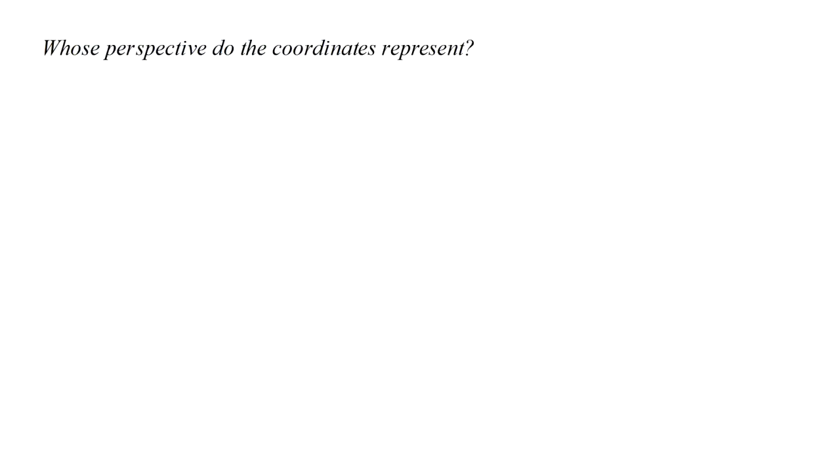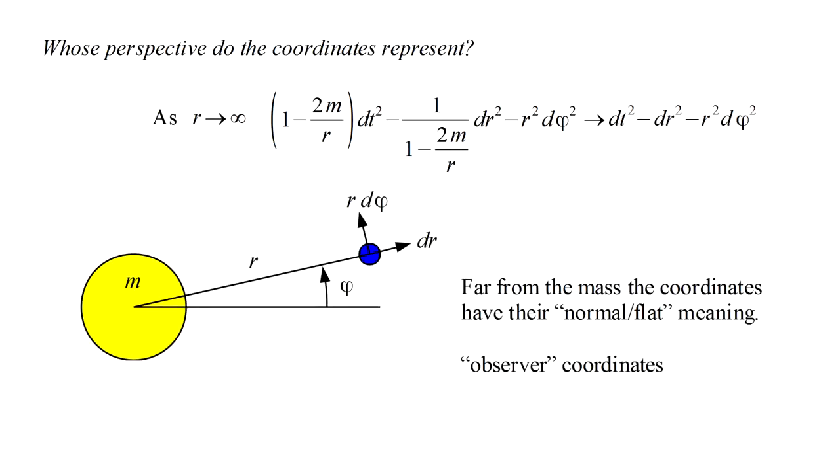In previous videos, we've seen that in general relativity, no single coordinate system can provide an undistorted view of all space-time, but instead provides only a particular perspective. What perspective do our coordinates represent? Consider our metric as we move far away from the mass, that is, the coordinate r increases towards infinity. The 2m over r term shrinks to zero, and we are left with a metric of flat spacetime. That is, far from the mass, the coordinates have their normal, or flat, meaning. These are sometimes referred to as observer coordinates or far away coordinates. But what about near the mass? This is where things get interesting.